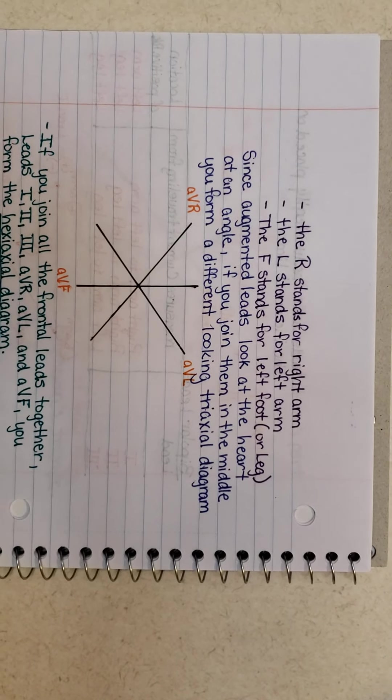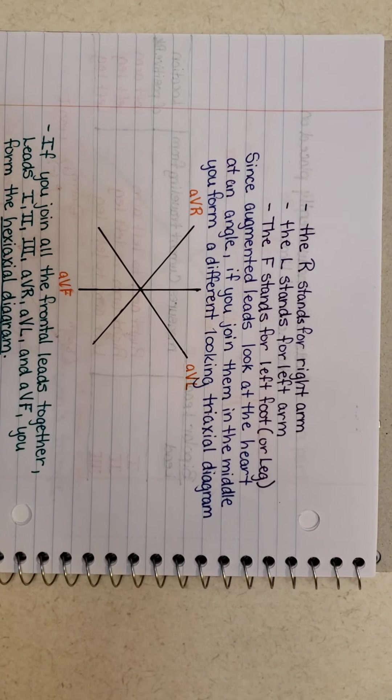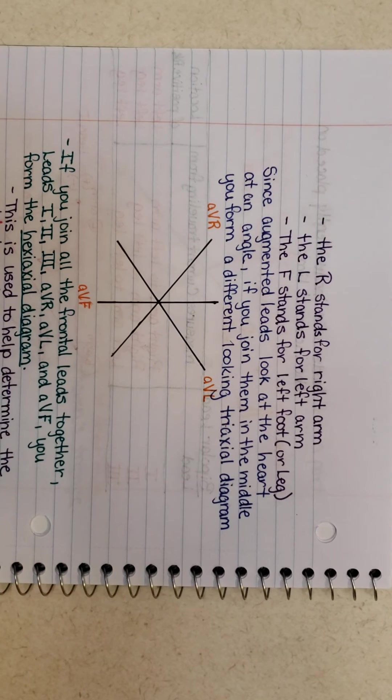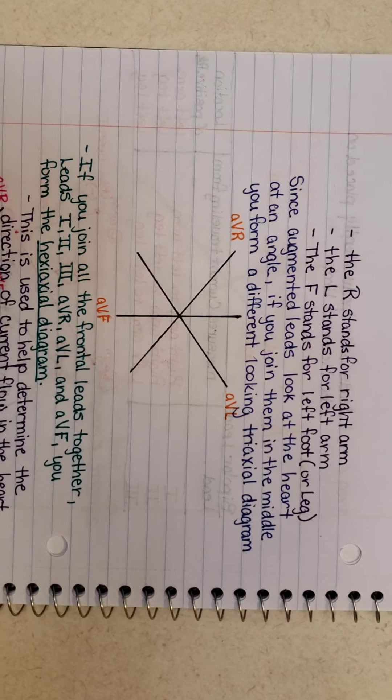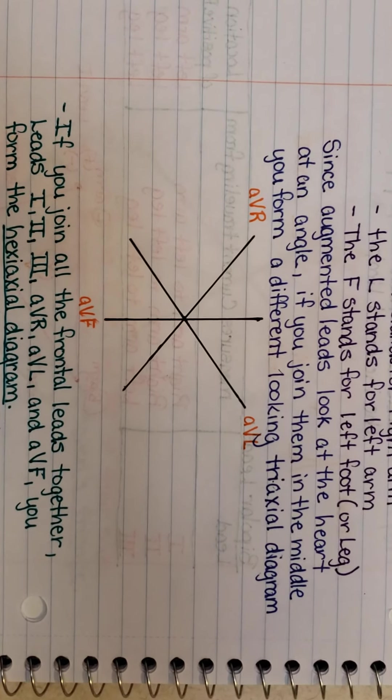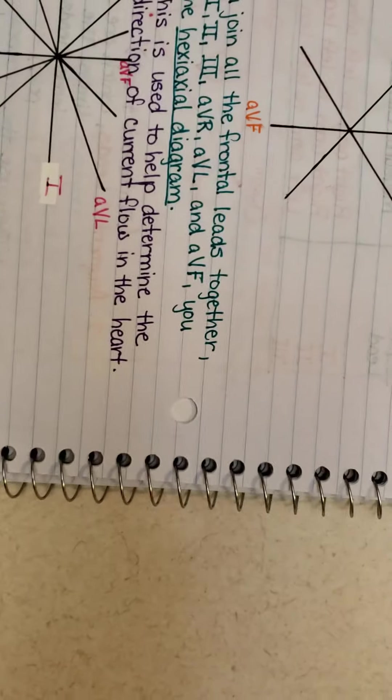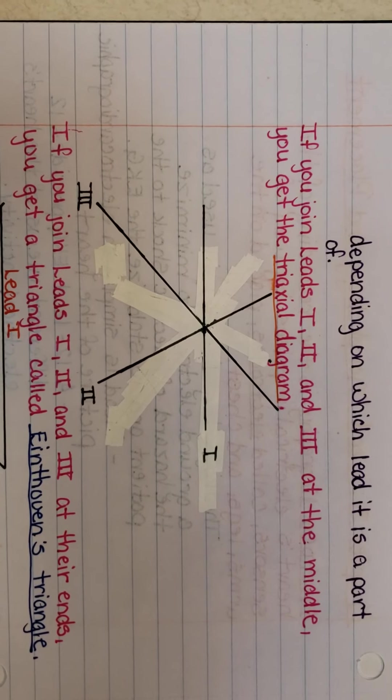Since augmented leads look at the heart at an angle, if you join them in the middle, they form a different looking tri-axle diagram. This is the augmented lead tri-axle diagram, and this is the limb leads. See how they're different?